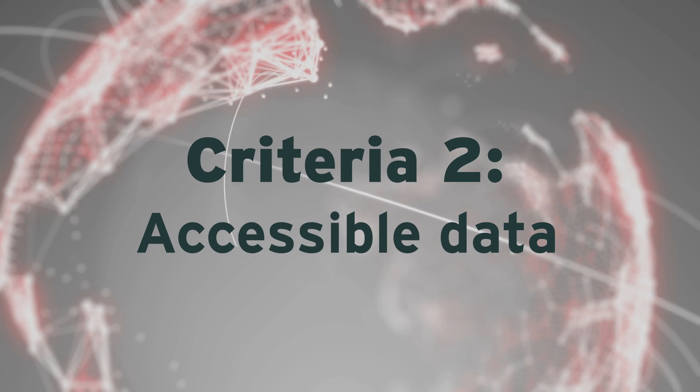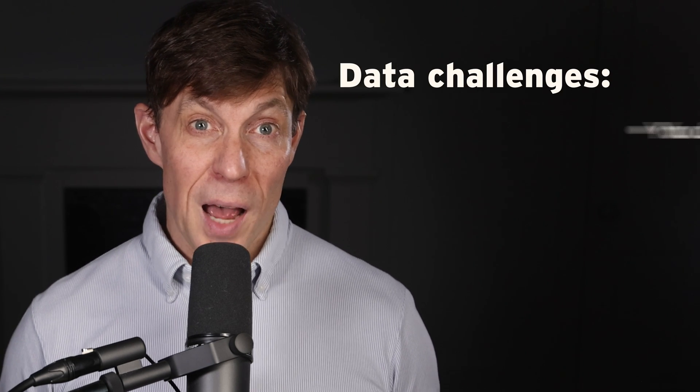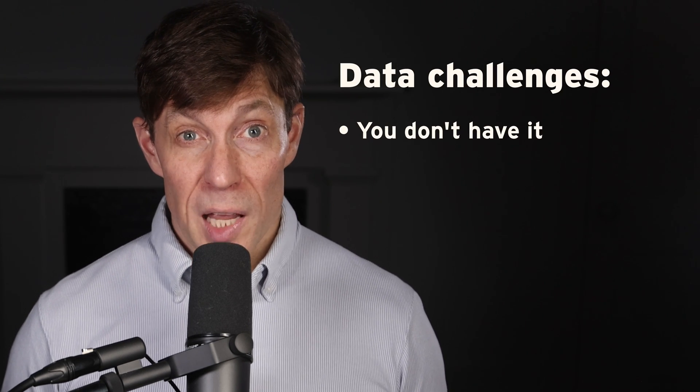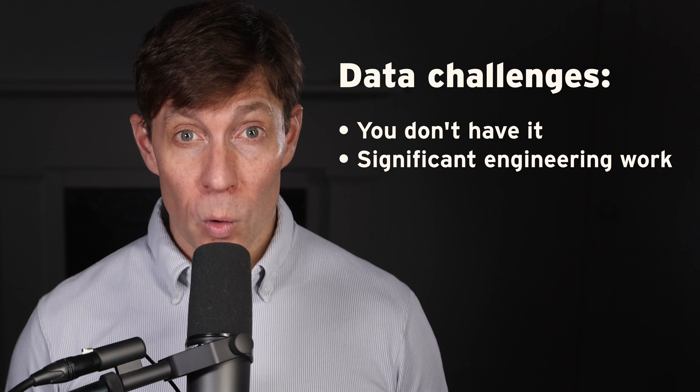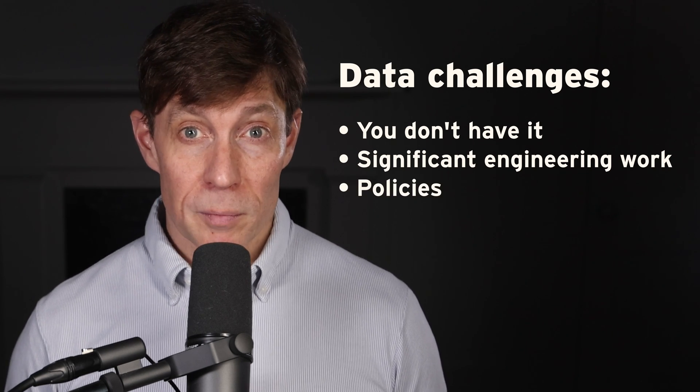Criteria two: accessible data. Many initial generative AI projects stall because the engineering team cannot access the data. The company may not have the data, it might require significant engineering work, or policies prevent the team from using it. While every project requires some data work, pick one where you can access the data.